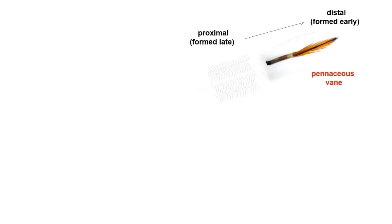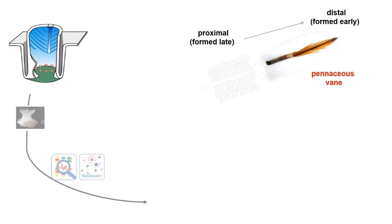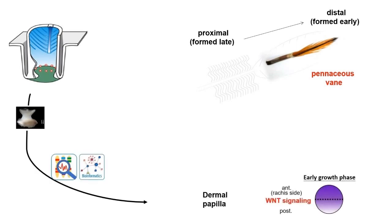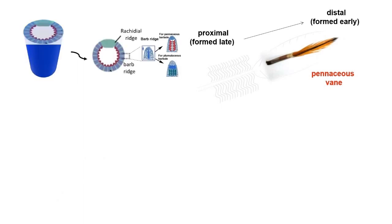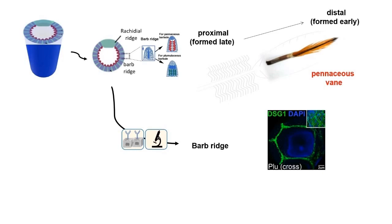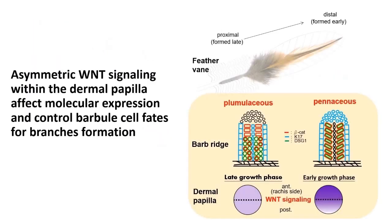Our laboratory studies show that the dermal papillae contains special information controlling pennaceous versus plumulaceous branching patterns. To investigate the cellular and molecular mechanism, we collected follicles at appropriate times as they formed. We dissected the dermal papillae for transcriptome analysis to find differently expressed genes, with further confirmation through biological studies and functional assays in chicken. We examined the barb ridge to understand cellular morphology and molecular expression. Our results show that asymmetric Wnt signaling within the dermal papillae affects molecular expression and controls barbular cell fate for branching formation.